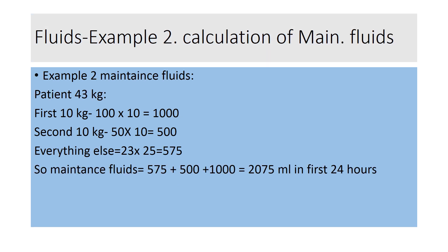For a 43 kg patient: first 10 kg gives 100 × 10 = 1,000 mls, second 10 kg gives 50 × 10 = 500 mls, and for the remaining 23 kg above 20 kg gives 25 × 23 = 575 mls. In total, maintenance fluids for this 43 kg patient would be 575 + 500 + 1,000 = 2,075 mls over the next 24 hours.